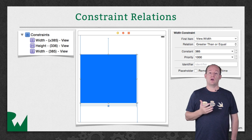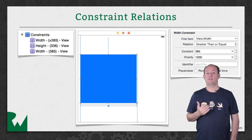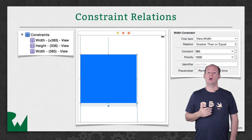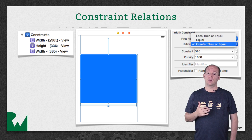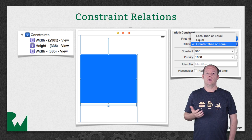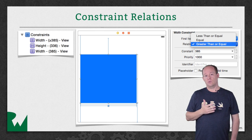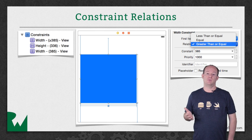So if I want it to be greater than or equal to 385, but as close to 385 as possible, I'll add another lower priority constraint that the width is equal to 385. Then Auto Layout will try to get as close to that width as possible.